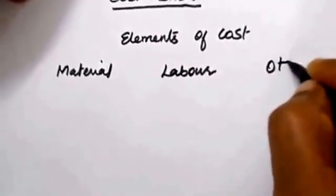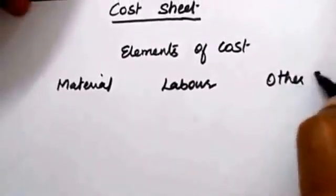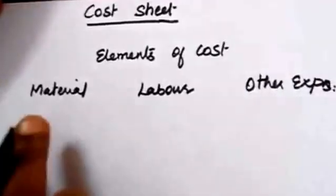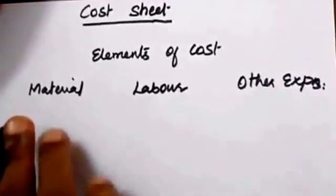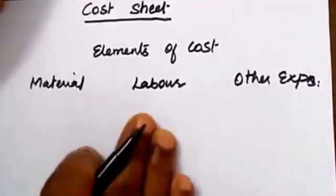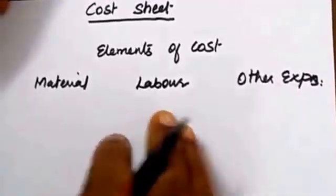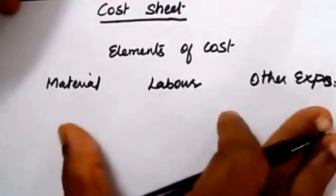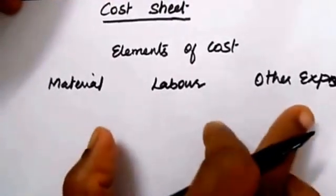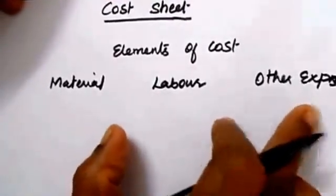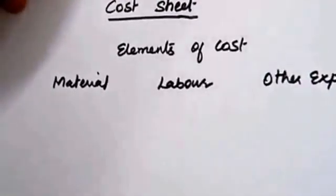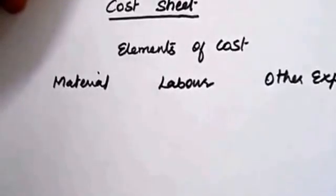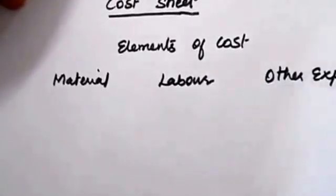Third one, other expenses. Any other expenses after material cost and labor cost — you will incur some other expenses which are related to production. That is called other expense. So we have material, labor, and other expenses as the three elements of cost.